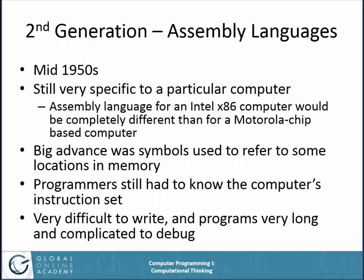In the second generation, we have assembly languages. These started coming about in the mid-1950s. They were still very specific to a particular computer — the assembly language for large IBM computers and UNIVAC computers were very different from each other, and that continued for decades. The assembly language for an Intel x86 computer would be completely different than for a Motorola chip-based computer. The big advance was that you could use symbols to refer to locations in memory, so you could write something like a machine language program in something that a human had some chance of understanding — but you still had to know the computer's instruction set.